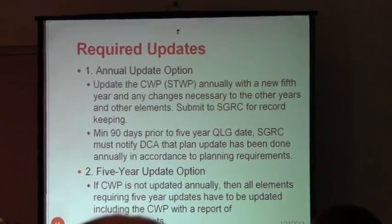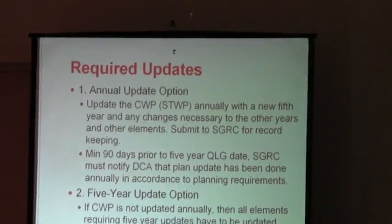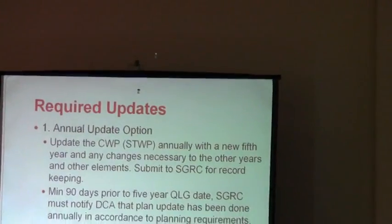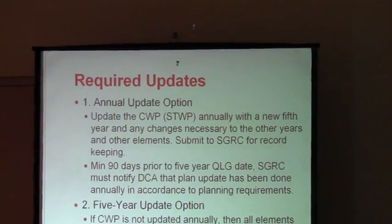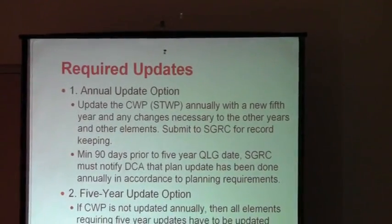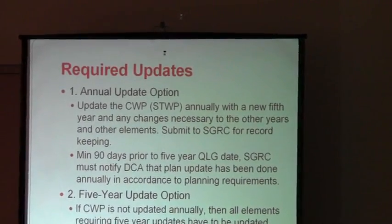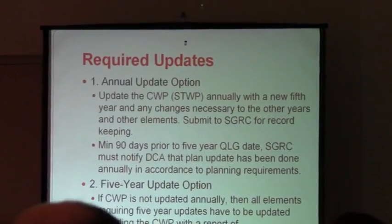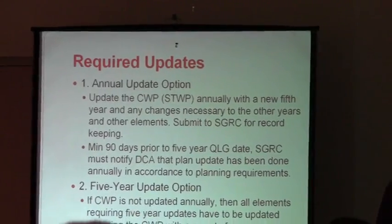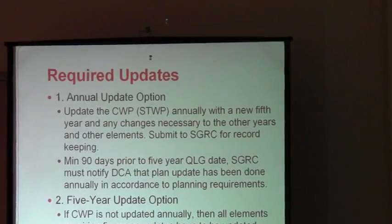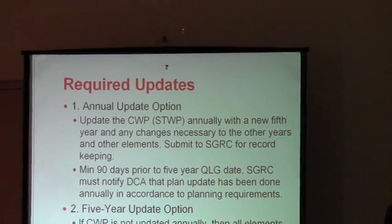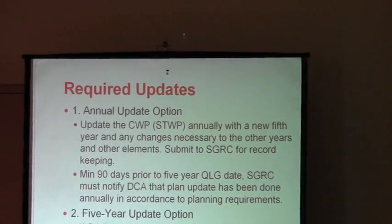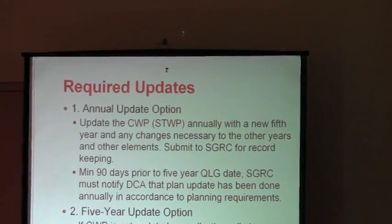There are a couple ways that you can update these plans. Every element had its own individual update requirement — annuals as deemed necessary every five years, but not every ten years anymore, so the update intervals are a lot shorter now. You can go ahead and review your comp plan, especially the short-term program, on an annual basis, and add a new fifth year and put a little status column on the end.